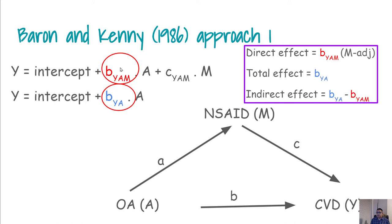And also you have this b_YA which is basically the total effect. So the total effect we can recognize as b_YA. For the direct effect we also know this because M is going to be adjusted in this first regression, so this b is our direct effect, which is M adjusted.